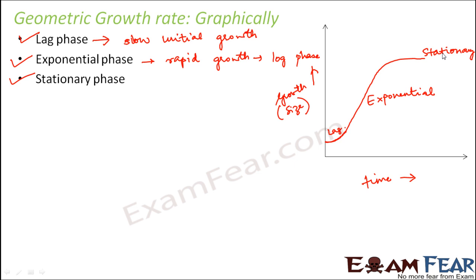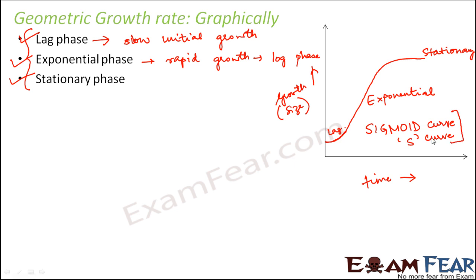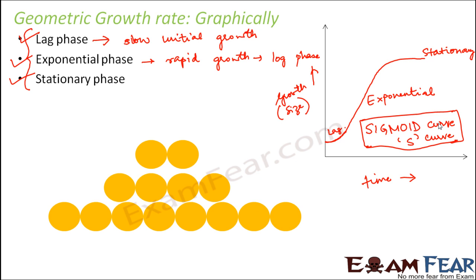So these are the three prominent phases of the geometric growth rate curve, and this curve is known as the sigmoid curve, or often it is known as the S-curve. Just like in the case of arithmetic growth rate you have the linear curve, here you have the sigmoid curve or the S-curve. This sigmoid curve is also known as the growth curve and it is the most common growth curve, because most of the cells, tissues and organs divide by geometric growth rate. So geometric growth rate is more common than arithmetic growth rate in plants.